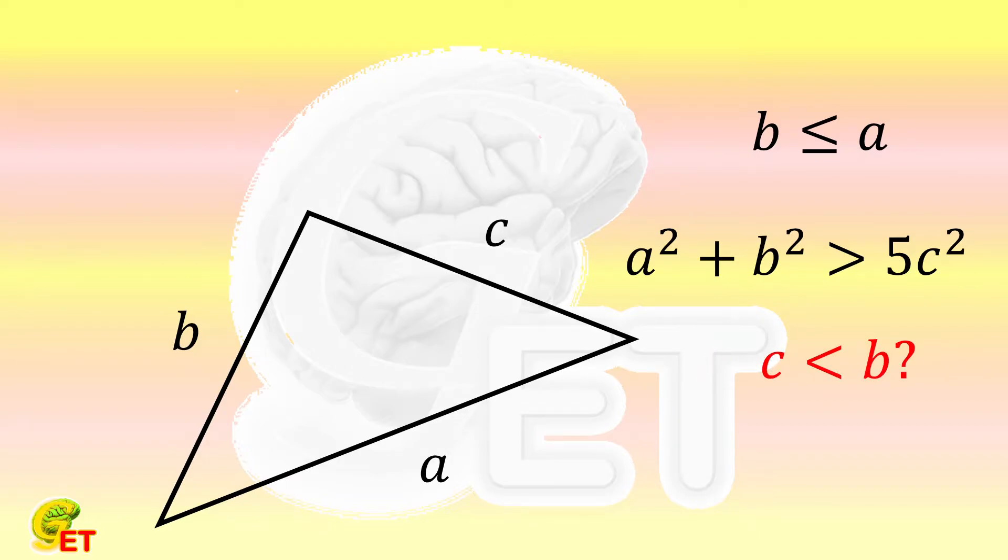Whenever encountering the problem related to the lengths of the three sides of a triangle, we always first think of that. In any triangle, two sides taken together in any manner are greater than the remaining one, and the difference between two sides is smaller than the third one.